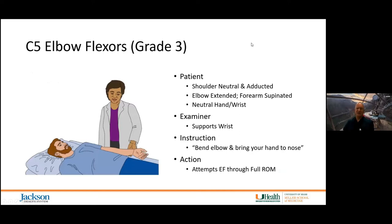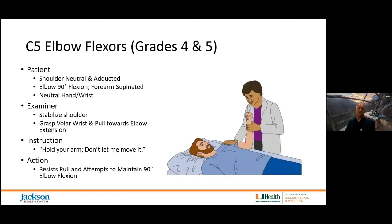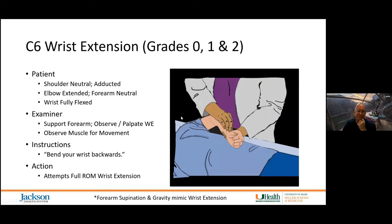For grade 3 elbow flexion: shoulder in neutral adducted position, elbow extended, forearm supinated — support the wrist and ask them to bend the elbow and bring the hand to the nose. Full range of motion against gravity is at least a three. For grade 4: shoulder neutral adducted, elbow flexed at 90 degrees, forearm supinated — ask them to hold the arm and resist as you try to move it into full extension. Less than age- and gender-matched normal strength is a four. Grade 5 is age- and gender-matched wrist extension with full resistance.